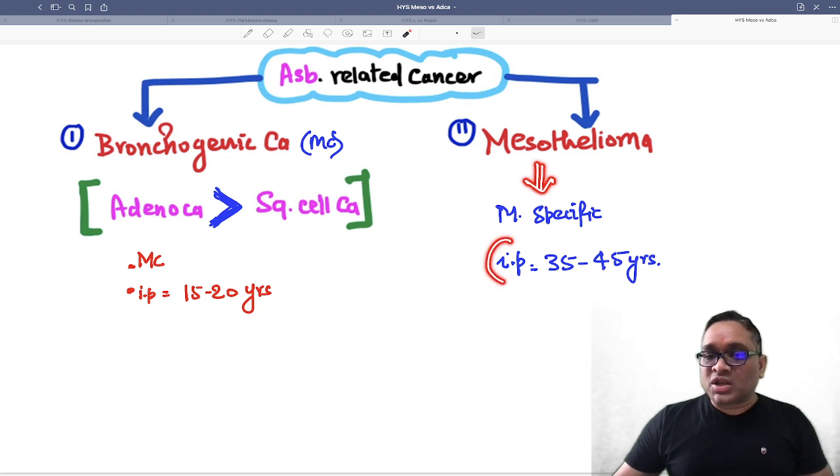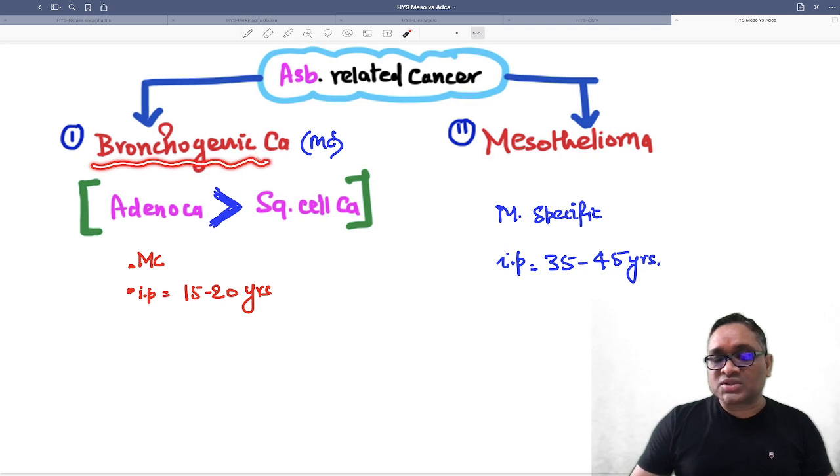Why? Because the incubation period is very long, 35 to 45 years, whereas bronchogenic carcinoma is more common because of the shorter incubation period of 15 to 20 years.